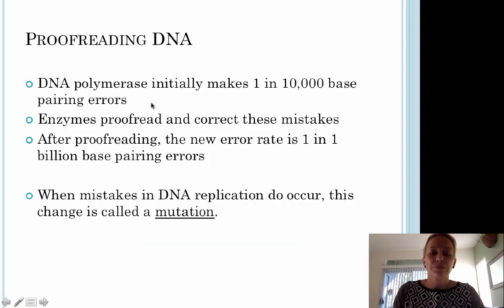DNA polymerase, in addition to adding complementary bases, has a proofreading function as well. DNA polymerase initially makes a mistake one in every 10,000 base pairings. But we don't see those mistakes because enzymes come in after DNA polymerase, and DNA polymerase itself proofreads its additions to DNA. After proofreading, the new error rate is one in one billion base pairs. Our DNA replication is extremely accurate and it's very rare that you actually get a mistake. But if a mistake does happen during replication, this change is referred to as a mutation.